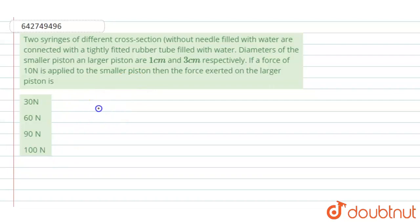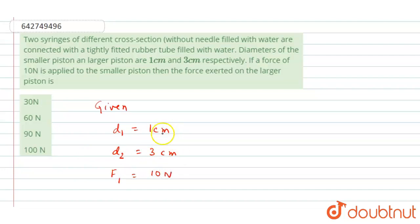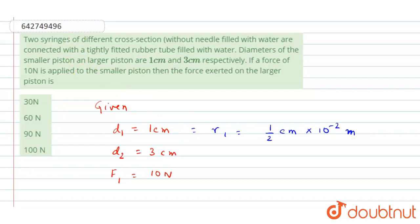Let us write the given values. Diameter of smaller piston d1 equals 1 centimeter, diameter of larger piston is 3 centimeters, and the force applied to the smaller piston is f1 equals 10 newtons. These diameters are in centimeters, so let us convert to meters and find the radius: r1 = 1/2 centimeter = 0.5 × 10⁻² meters, and r2 = 3/2 × 10⁻² meters.